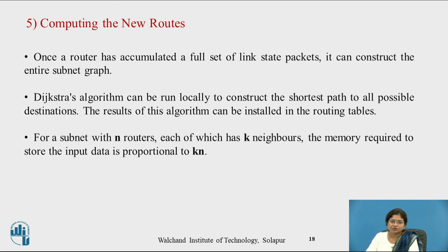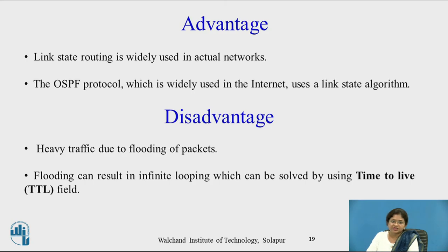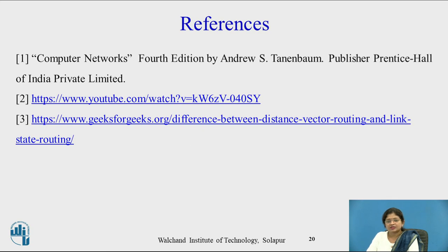The last step is computing the new routes. Once a router has accumulated a full set of link state packets, it can construct the entire subnet graph. Dijkstra's algorithm is run locally to find the shortest path to all possible destinations. For a subnet with n routers each having k neighbors, the memory required is proportional to kn. Link state routing is widely used in actual networks; the OSPF (Open Shortest Path First) protocol uses the link state algorithm. The disadvantage is heavy traffic due to flooding of packets, which can result in infinite loops — solved by using TTL (Time to Live).